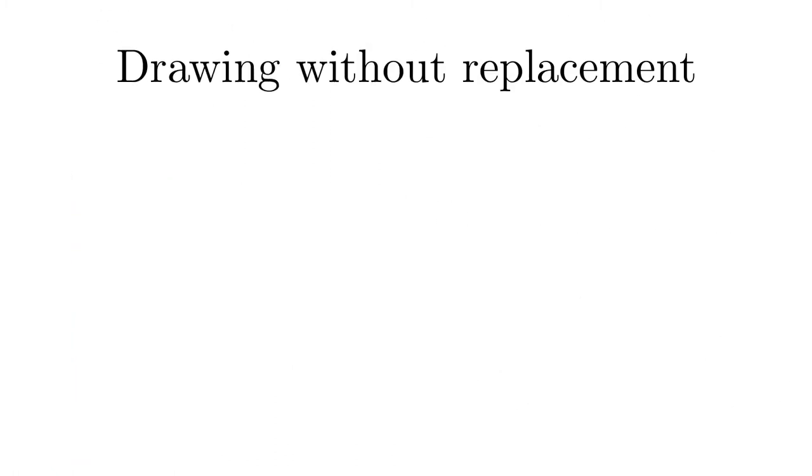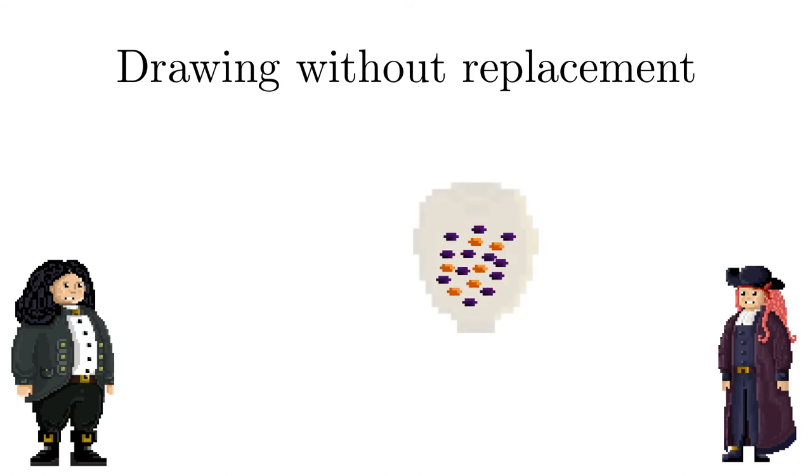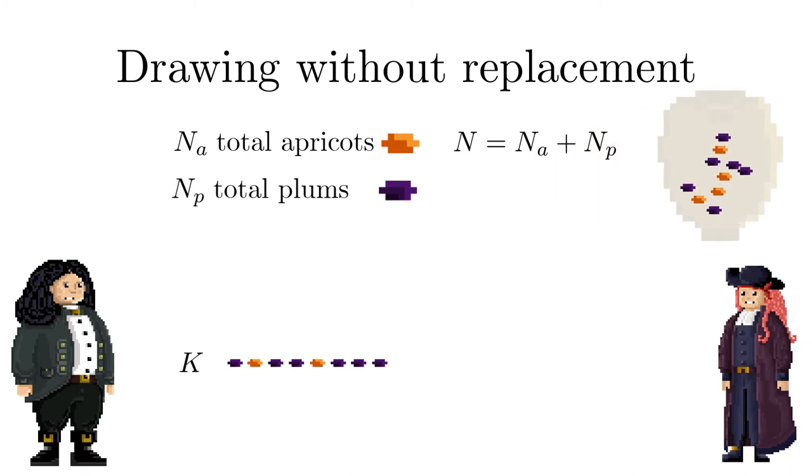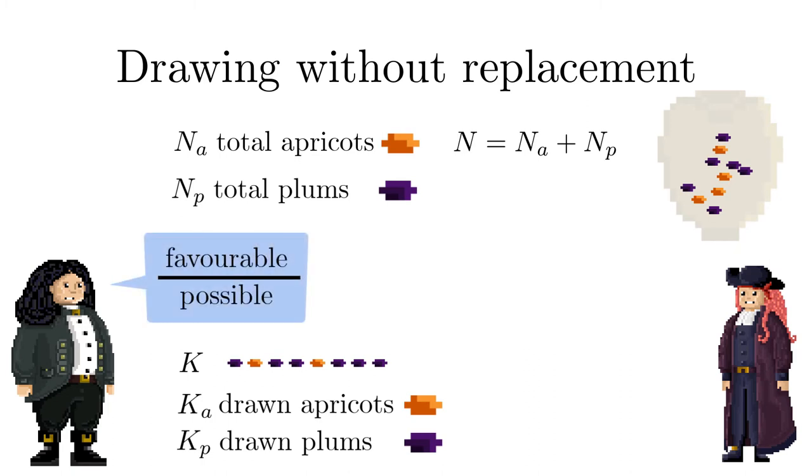Now we follow Captain Bay's recommendation not to put the fruits back into the pot. The technical term is without replacement. The general situation is the following. Originally there are n sub a apricots and n sub p plums. So in total n fruits in the clay pot. We draw at random k elements. What is the probability that we find k sub a apricots and k sub p plums? We use the classical definition of probability as the ratio of the number of favorable outcomes divided by the number of total outcomes.